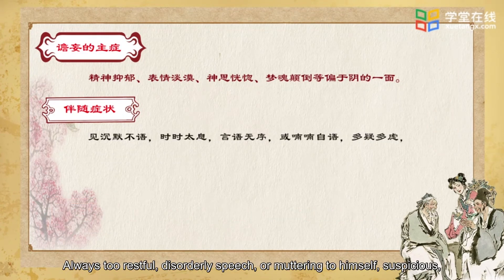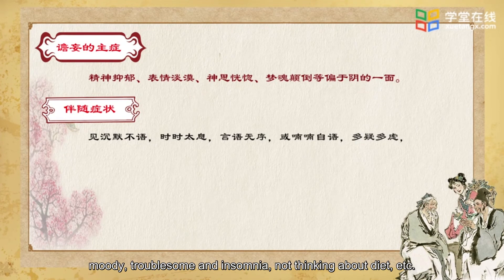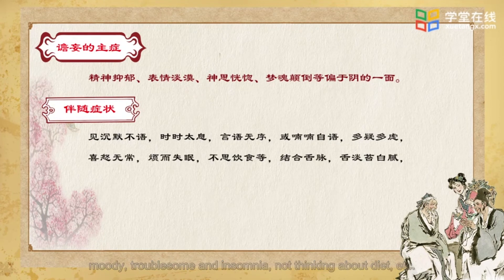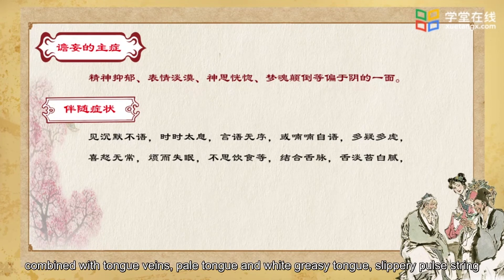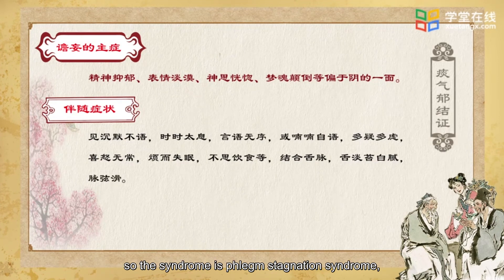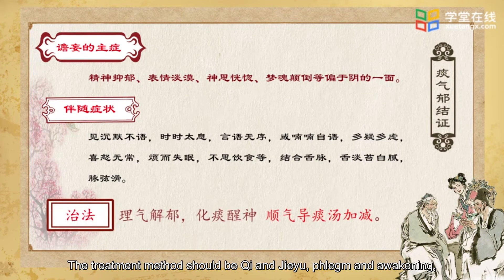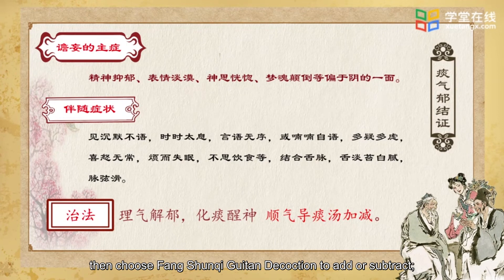For restless disorderly speech, or muttering to himself, suspicious, moody, troubled insomnia, not thinking about diet, etc., combined with pale tongue and white greasy coating, slippery string pulse — the syndrome is phlegm stagnation syndrome. The treatment method should be to move qi, resolve phlegm and awaken the mind. Choose Shunqi Huatan Decoction with additions and subtractions.